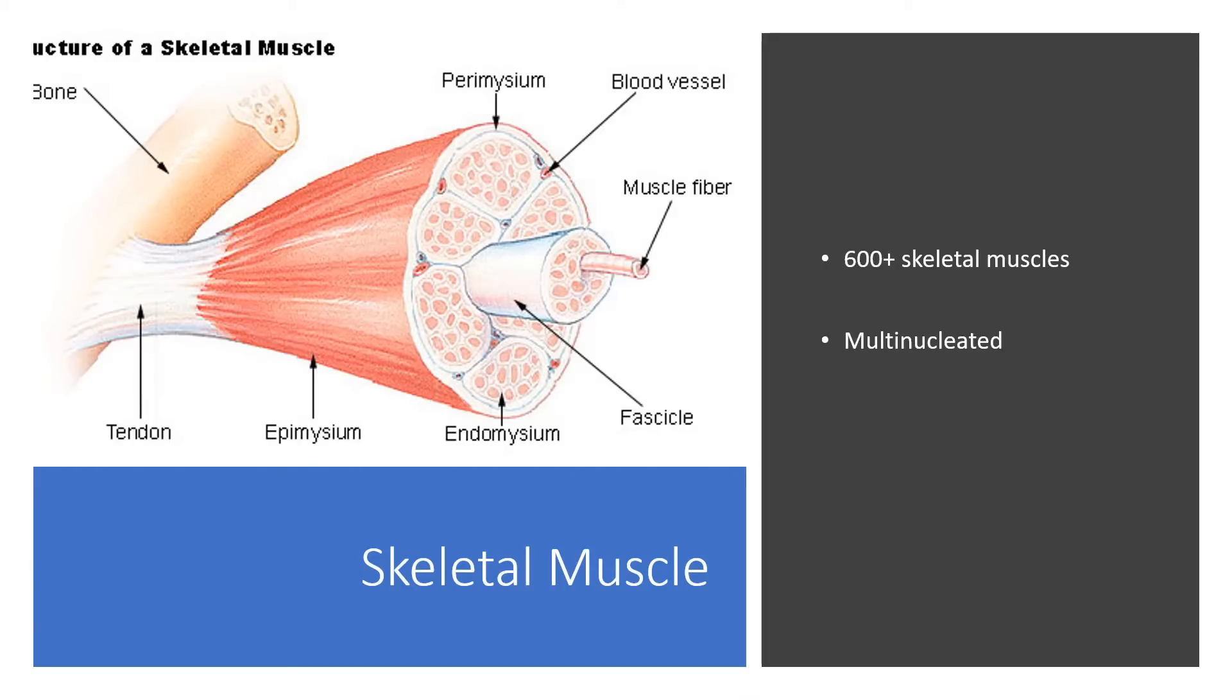And within each fascicle, there are numerous muscle fibers. So if you think about it, it's kind of a layer within a layer within a layer. So your individual bicep muscle has many components to it, many fascicles within that individual muscle. And within each fascicle, you have many muscle fibers. Another kind of point to make about muscle is that we have 600 plus skeletal muscles in the body. And that muscle fibers are actually multi-nucleated cells. Most cells have a single nucleus. However, muscle fibers actually have multiple nuclei.